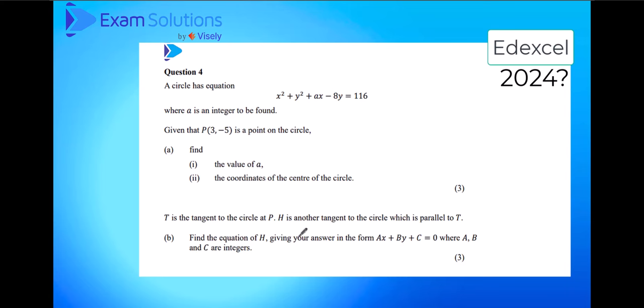Looking historically, the second part of a circle question will usually involve some form of equation of a line, either looking at perpendiculars, tangents, points of intersection, etc.